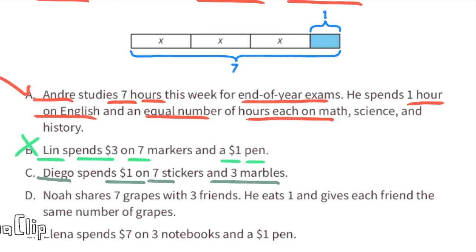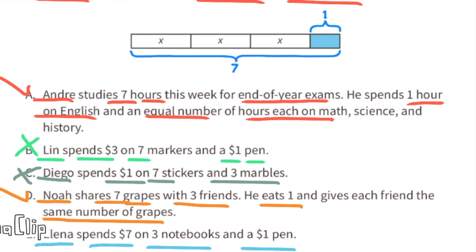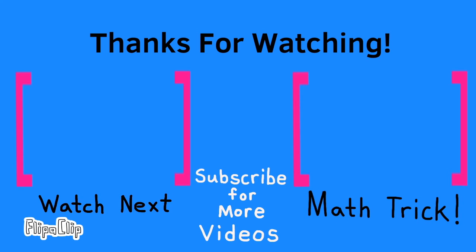Story c — Diego spends one dollar on seven stickers and three marbles — this doesn't match; the diagram shows 7 total spent on three marbles and one sticker. Story d — Noah shares 7 grapes with three friends, eats 1, and gives each friend the same number. The three x's represent the equal amounts given to friends and the one unit represents the grape he ate — story d matches. Story e — Elena spends 7 dollars on three notebooks and a one-dollar pen. The three x's represent the notebooks and the one unit represents the pen — story e matches. Be sure to support my YouTube channel by liking this video, leaving a comment, and subscribing. Thanks for watching!